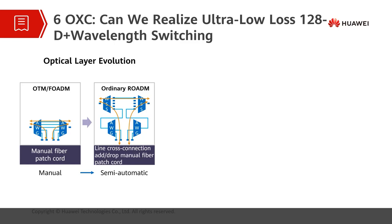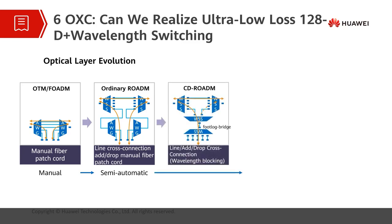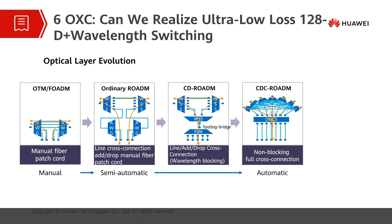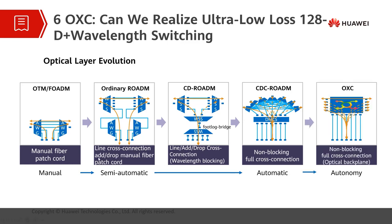Pass-through services are groomed using WSS components, while local-level services are groomed using manual fiber patch cords. After the ASON architecture was introduced to optical networks, high reliability optical layer services required equipment to groom local services in various directions. CD and CDC ROADM have become mainstream optical layer configurations. In recent years, the development of fully connected data centers and low-latency private line services has led to the emergence of supernodes, and the OXC solution has emerged.